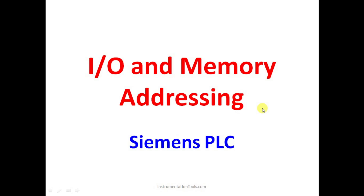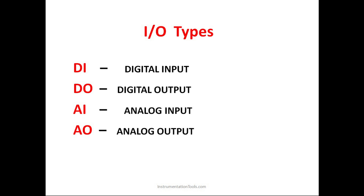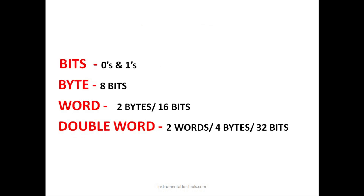In today's lecture we are going to discuss input, output, and memory addressing in Siemens PLC. Input types and output types can be divided into two categories: digital input and digital output. Similarly, in case of analog, there will be analog input and analog output.